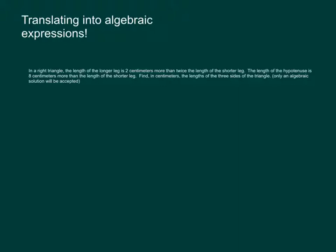So let's look at this example. We have a right triangle. We know the length of the longer leg is 2 centimeters more than twice the length of the shorter leg.